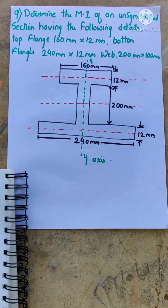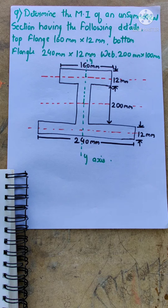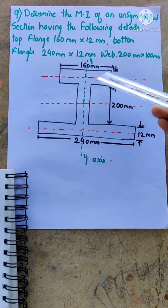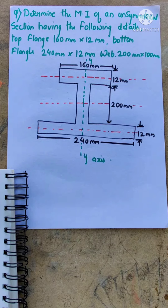Today we will start with a new numerical on unsymmetrical section. We have seen the symmetrical section previously. Now we will see what happens when our beam is unsymmetrical. In an unsymmetrical section, the top and bottom flange dimensions — their length and width — are different from each other. That is why we call it unsymmetrical.